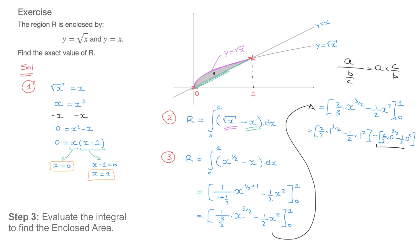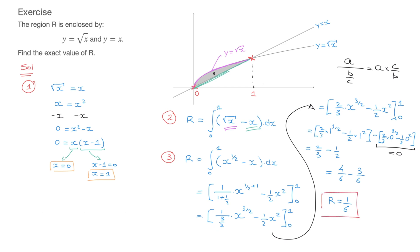The expression simplifies to 2/3 times 1^(3/2) minus 1/2 times 1². Since 1 raised to any power is 1, this becomes 2/3 times 1 minus 1/2 times 1, which is 2/3 minus 1/2. Converting to a common denominator: 4/6 minus 3/6 equals 1/6. So the enclosed region R is equal to 1/6. That's the final answer, and that's how we find the area enclosed by y equals √x and y equals x.